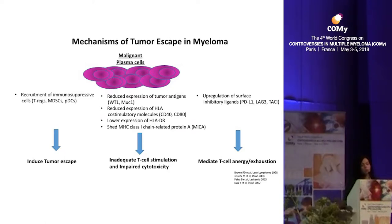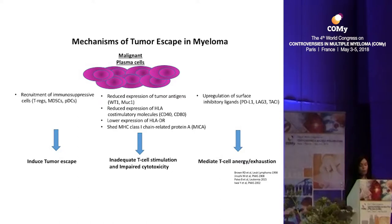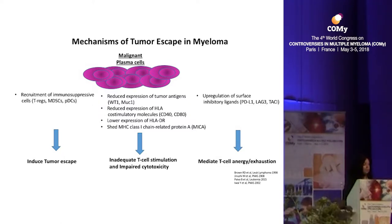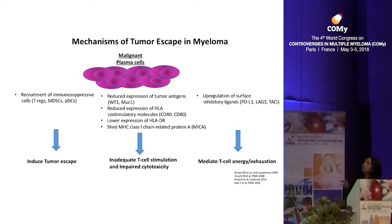The myeloma cells themselves play an important role in tumor escape. Through production of all these cytokines they recruit immunosuppressive components. They also impair cytotoxicity because they have very little tumor antigen, making it easy for the tumor to hide. They have low expression of HLA co-stimulatory molecules, particularly CD4 and CD8, low HLA-DR expression, and they shed MICA, a protein that further inhibits cytotoxicity.